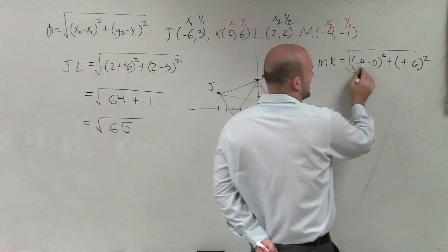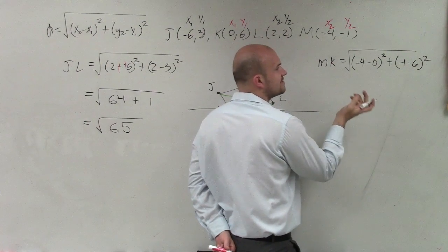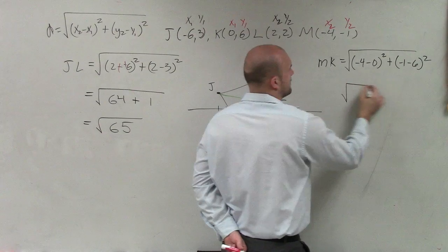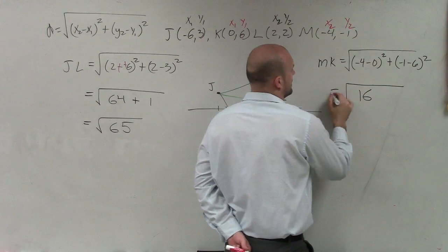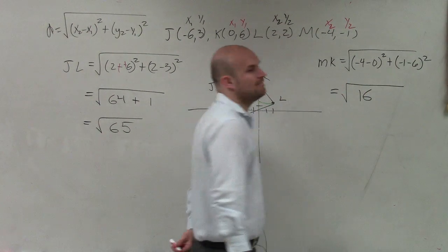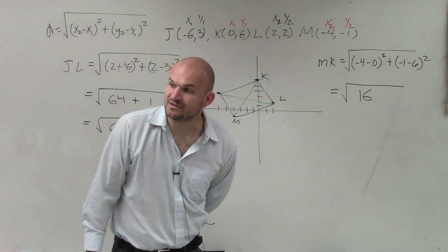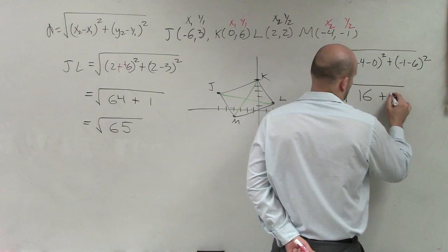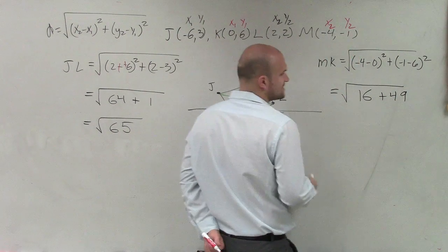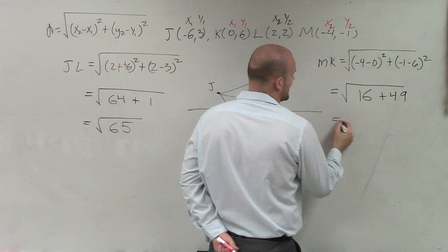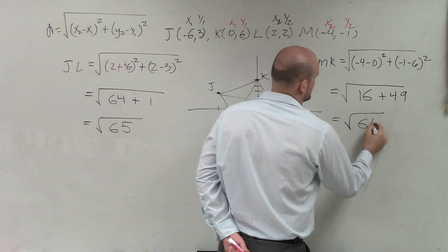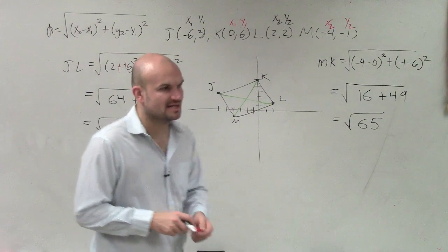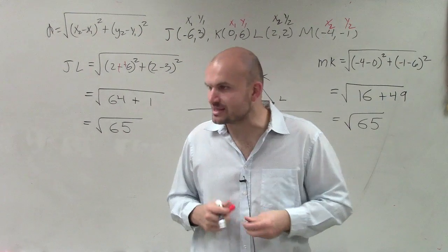Then over here, negative 4 minus 0 is negative 4. Negative 4 squared is 16. Negative 1 minus 6 is negative 7. Negative 7 squared is 49. 16 plus 49 equals 65. So the square root of 65 equals the square root of 65. Since my diagonals are equal, it now makes sense that I can say this is a rectangle.